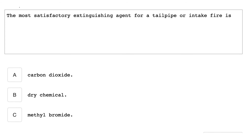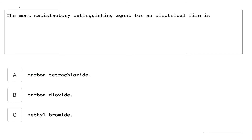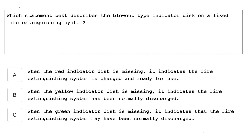The most satisfactory extinguishing agent for a tailpipe or intake fire is carbon dioxide. The most satisfactory extinguishing agent for an electrical fire is carbon dioxide. Which statement best describes the blowout type indicator disc on a fixed fire extinguishing system? When the yellow indicator disc is missing, it indicates the fire extinguishing system has been normally discharged.